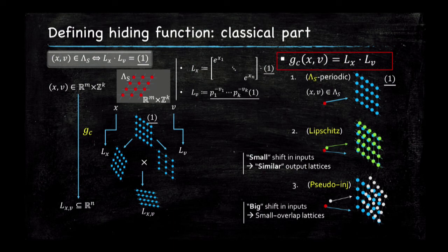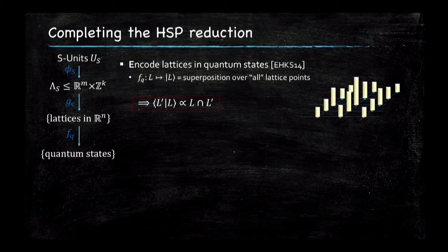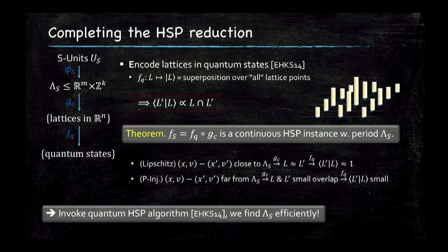Given the part of the input in R^m, I can calculate one lattice. Given the part in Z^k, I can calculate another lattice. I can do that whether or not I'm looking at a point that's in the S-unit group. I can multiply them together and get something such that when I get an S-unit it gives me the trivial lattice, and when I do not, it gives me some other lattice. I want inputs that are close together to produce similar lattices, and far-apart inputs to produce differing lattices. We proved these two properties to then use the quantum encoding from Eisenträger, Hallgren, Kitaev, and Song's paper.